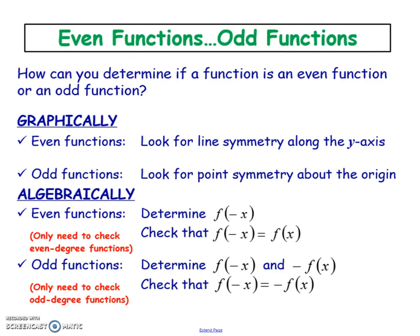Algebraically, for even symmetrical functions: take your original polynomial and sub in negative x everywhere you see an x — if those two expressions are the same, you have an even symmetrical function. For odd symmetrical functions: sub in negative x, then compare to putting a negative in front of the entire f(x) — if those two match, you have an odd symmetrical function.